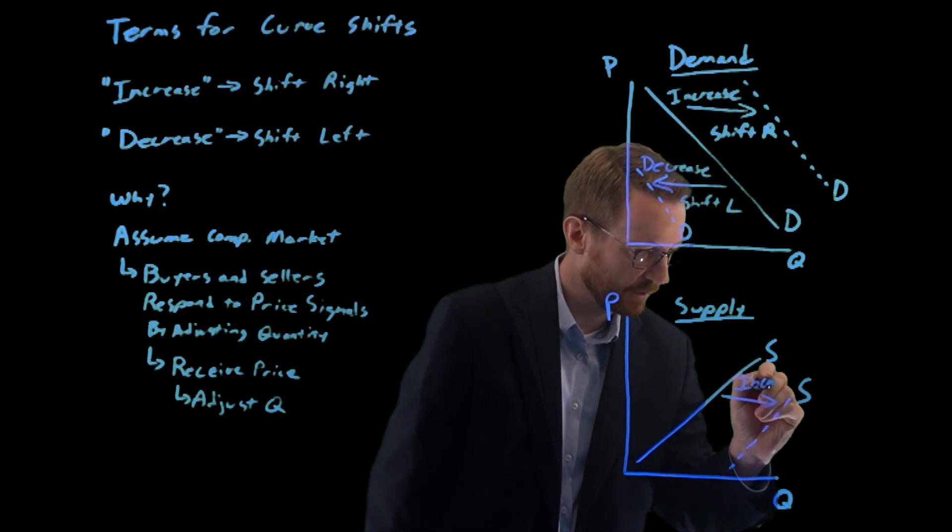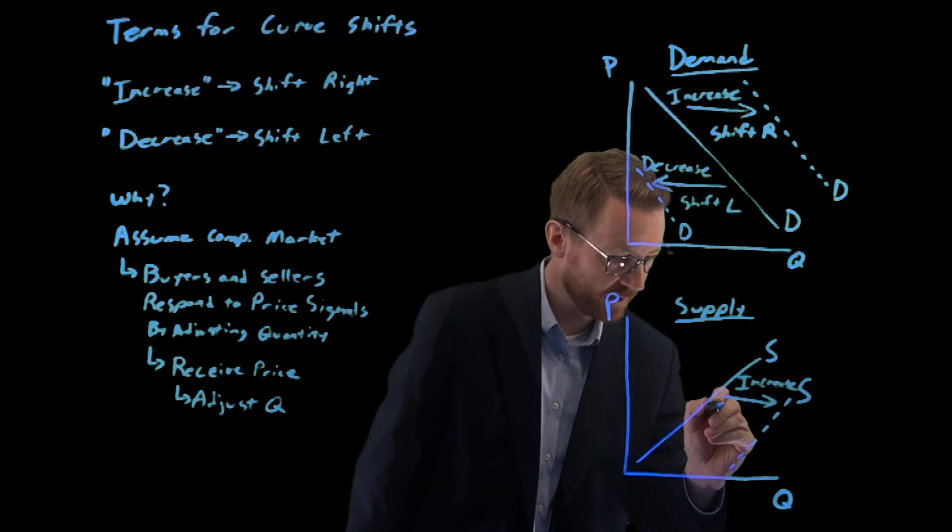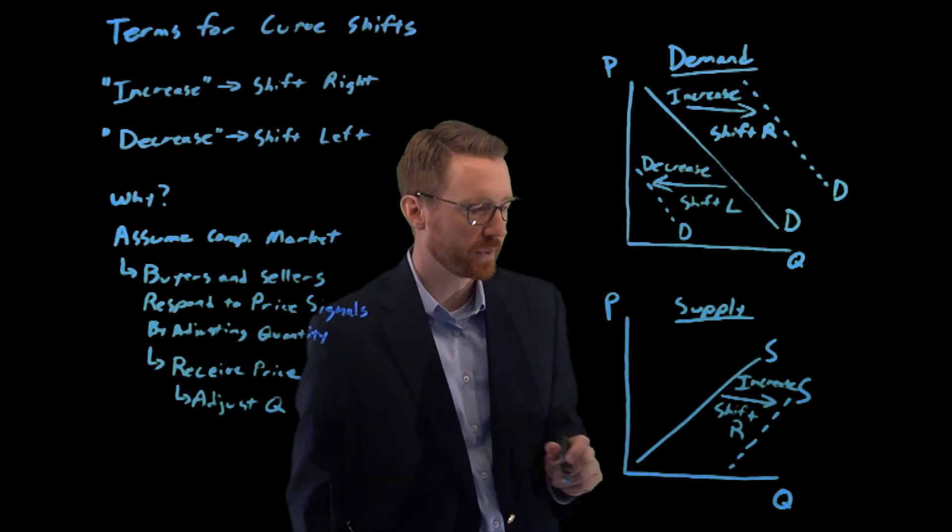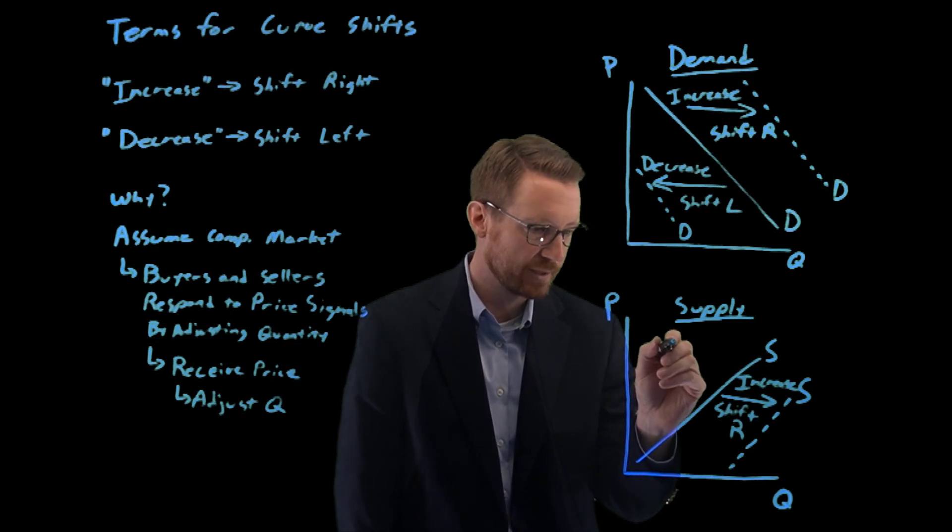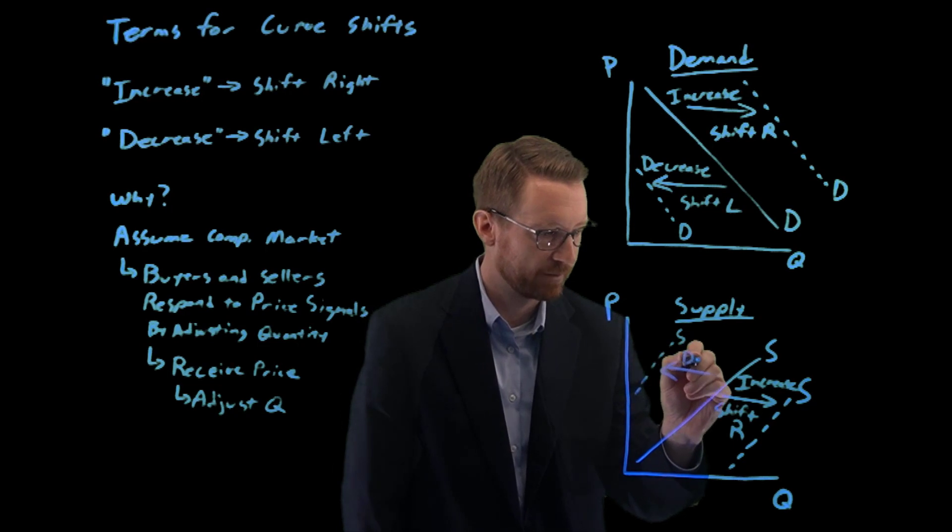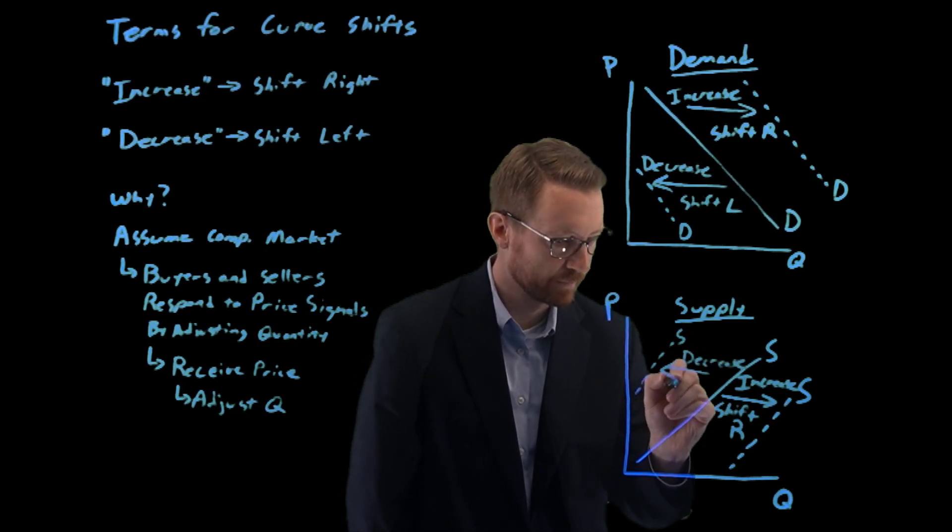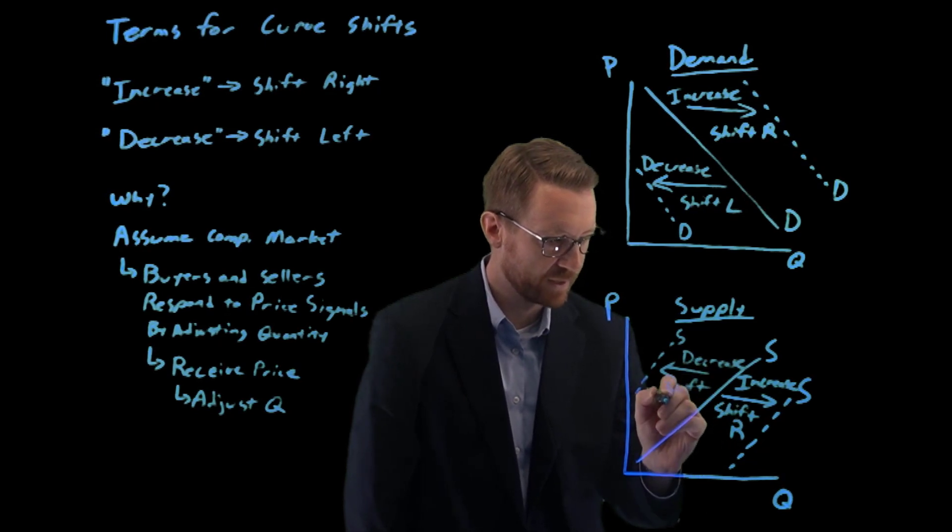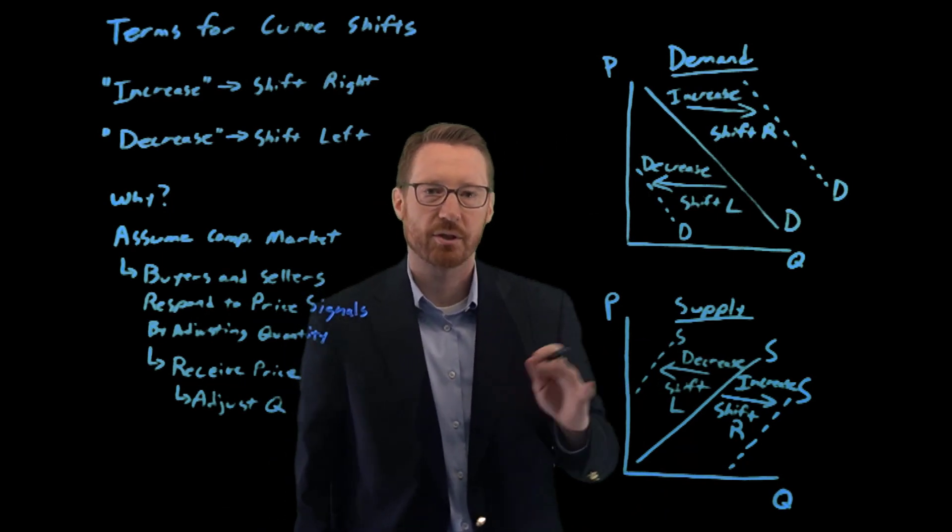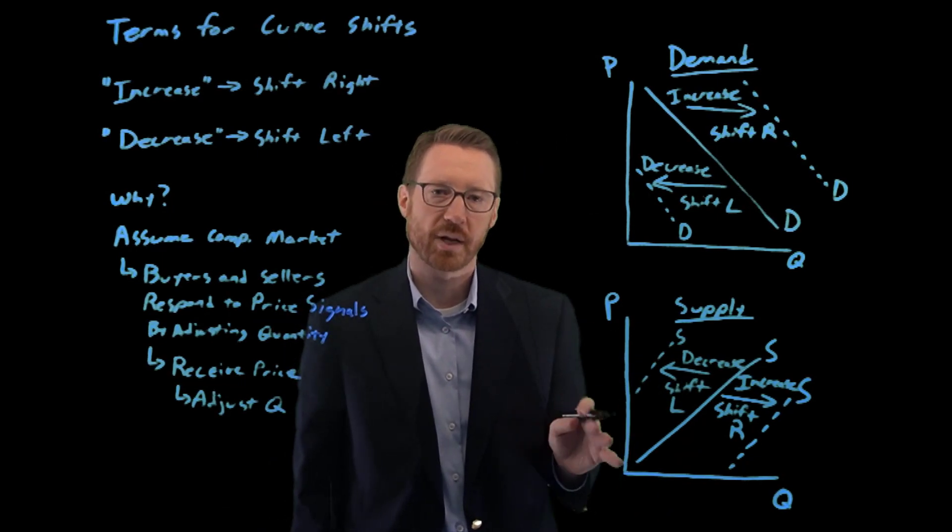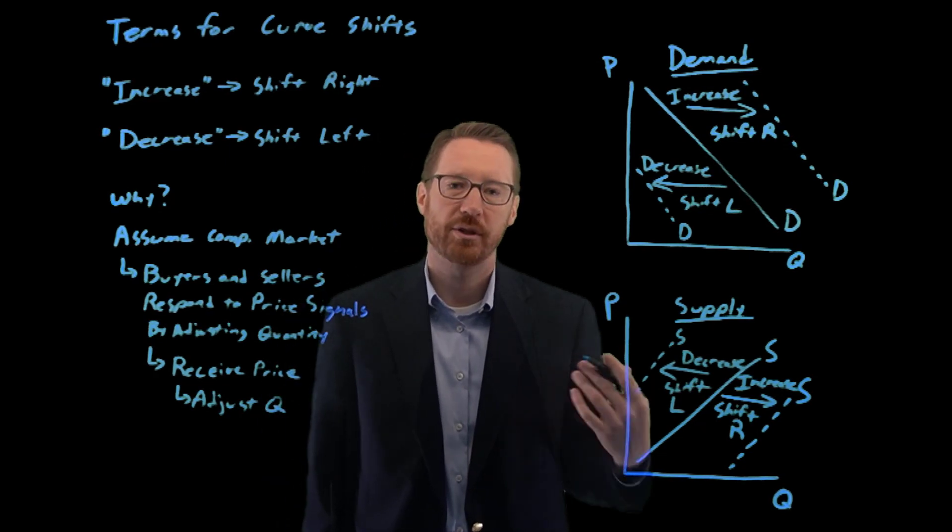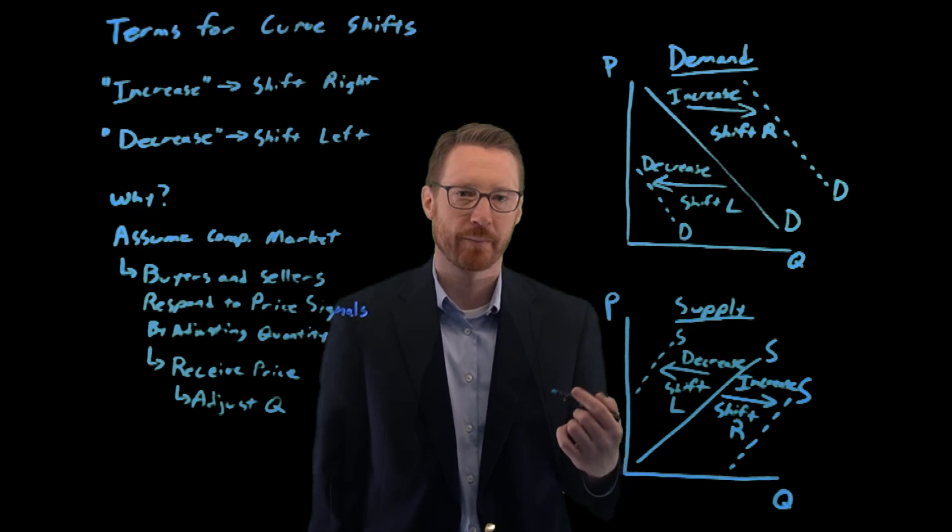So this is our increase in supply and it's a shift to the right. Versus a decrease in supply would be the curve shifting to the left. So a decrease means shift to the left.